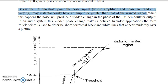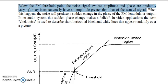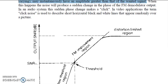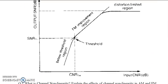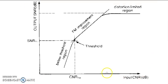The threshold point is shown in a graph where the x-axis represents the input carrier-to-noise ratio in dB and the y-axis represents the output signal-to-noise ratio of the demodulator in dB.